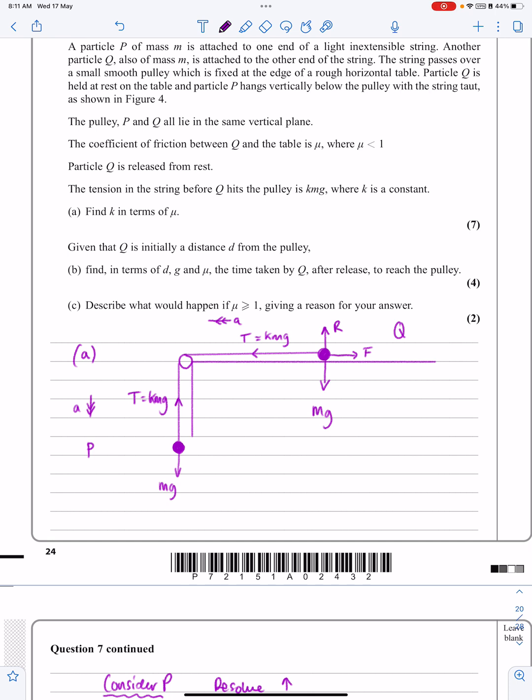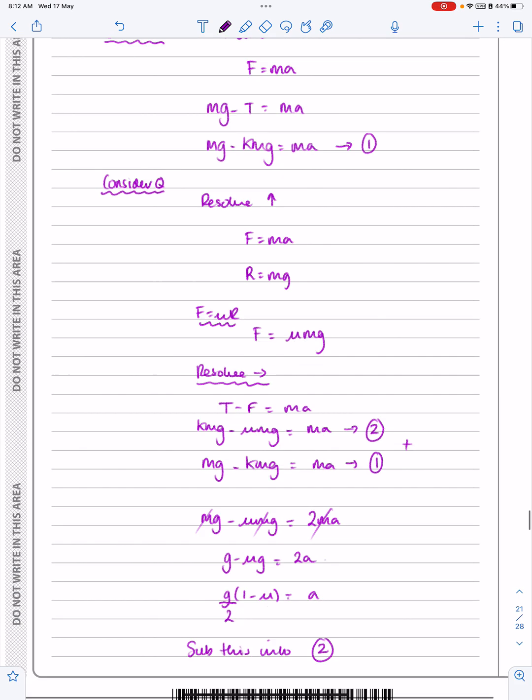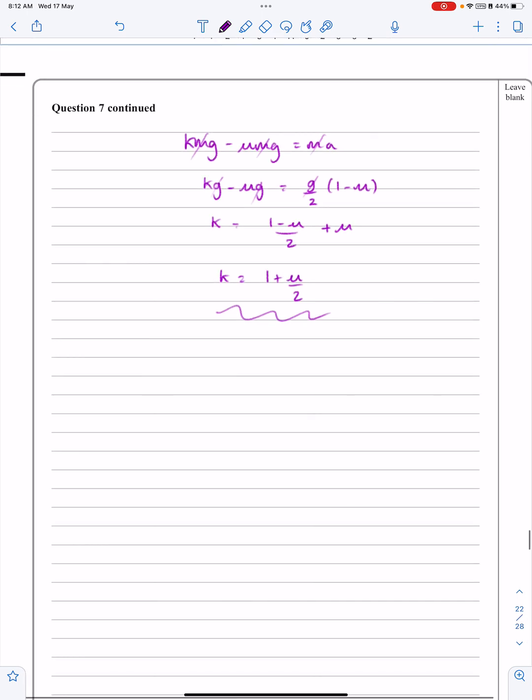Right. Now, given that Q is initially a distance D from the pulley, straight away, you experienced mathematicians should be saying this is going to be a SUVAT question, isn't it? So D is a distance. Sorry, it's a distance D from the pulley. Find in terms of D, G and mu, the time taken to reach the pulley. So this is unusual. They normally say that it doesn't hit the pulley. But OK, it's going to go all the way along to reach the pulley. And what are we trying to do? Find the time taken. So I want T. So for part B, this is SUVAT.